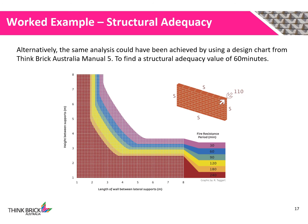Alternatively, we could have conducted the same analysis using Think Brick Australia Manual 5 design charts. Here, we have a 110mm thick wall supported on all four sides. By reading the graph for a length of 4.2m and a height of 3.5m, we can see that we have a structural adequacy value of 60 minutes.